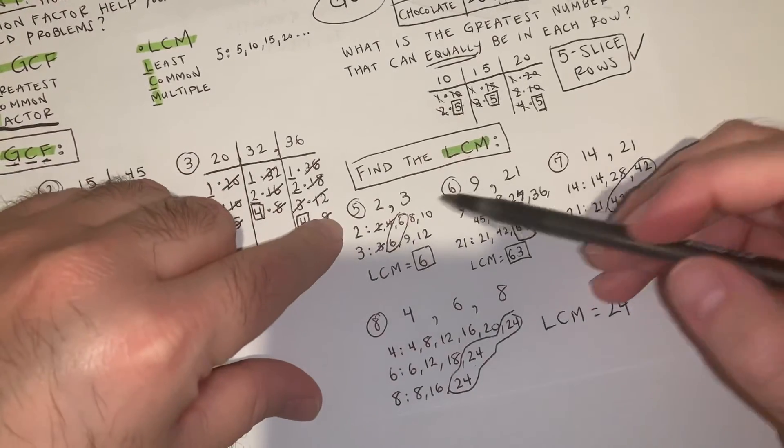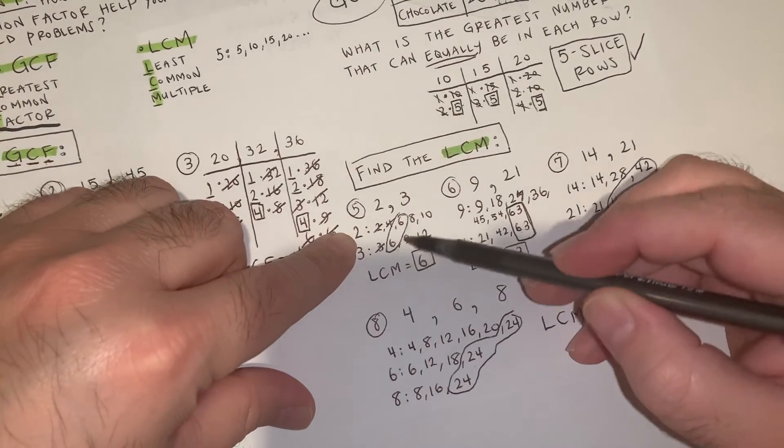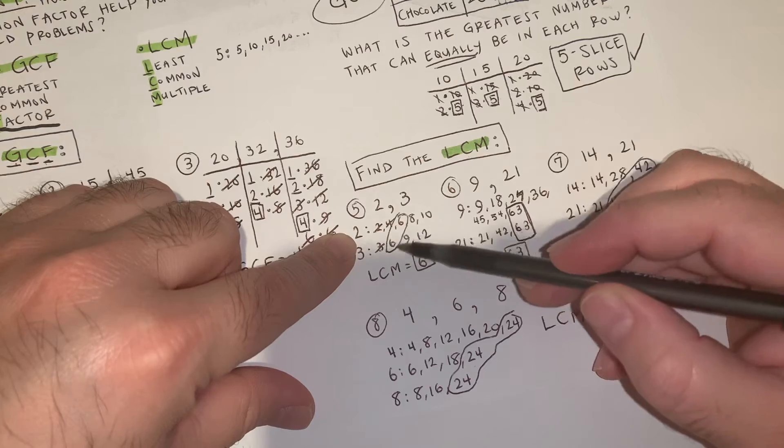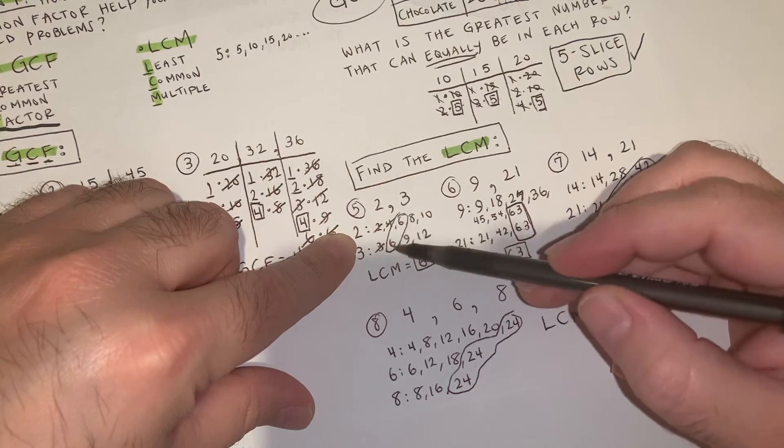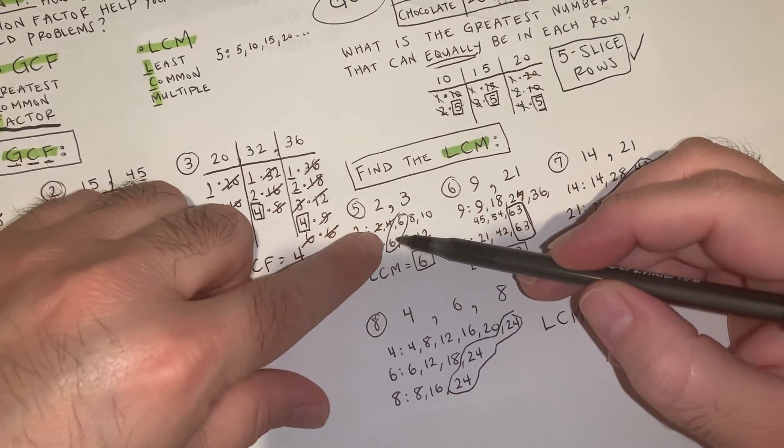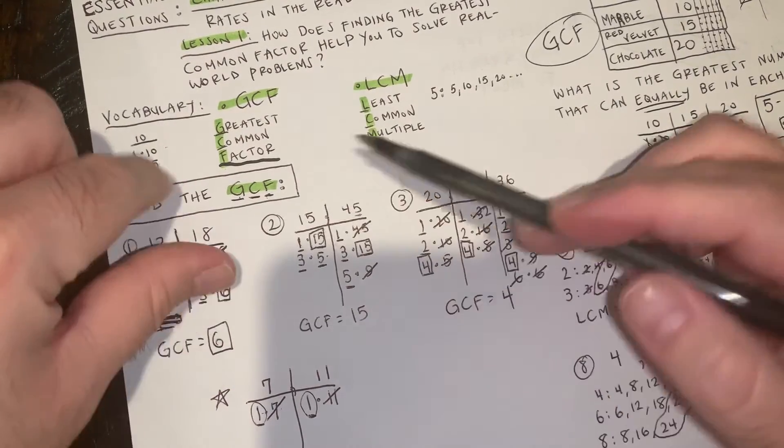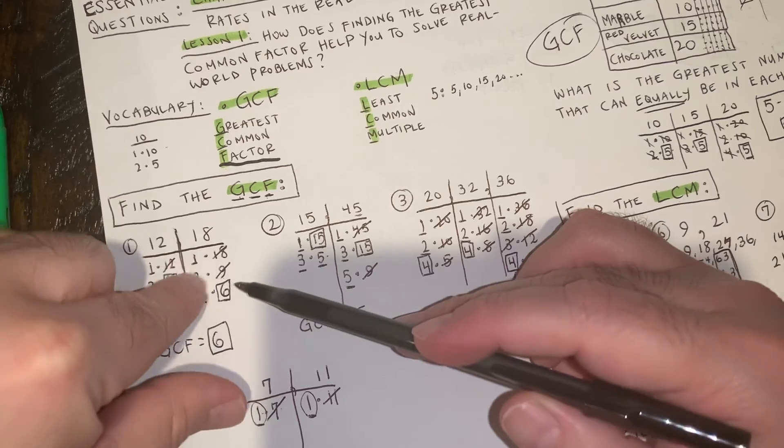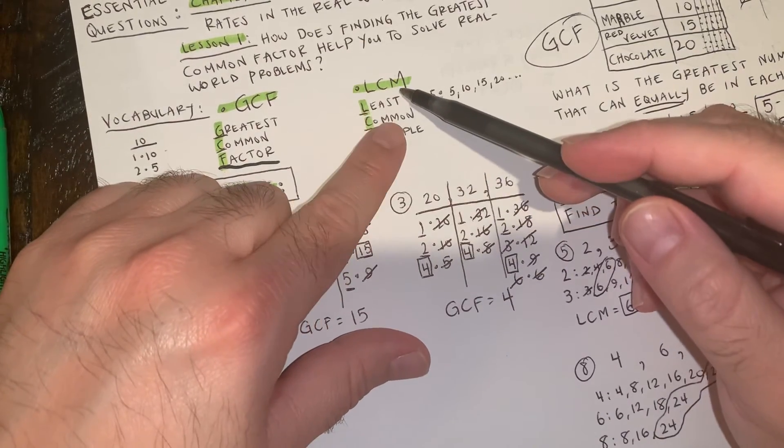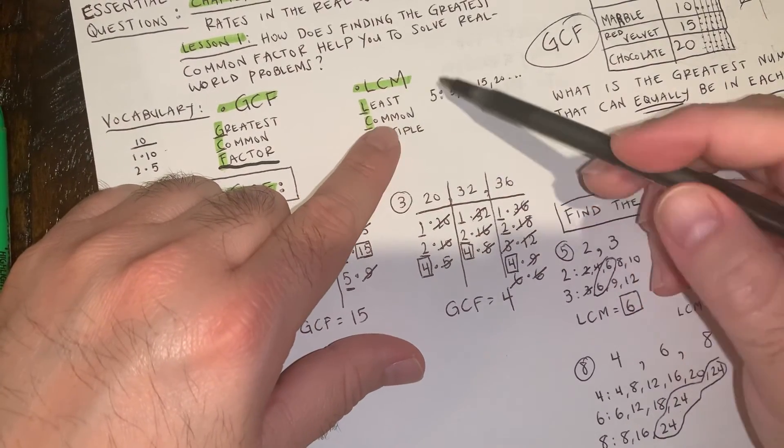Now what you do is you do it for each of the numbers. And the first time you meet, the smallest number that is common is gonna be your answer. So make sure you know the difference. Greatest is gonna be the biggest common, the biggest number that's the same on both of them. And then least common would be the smallest number that's the same.